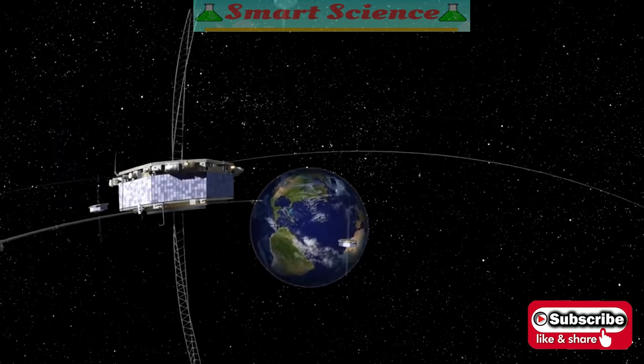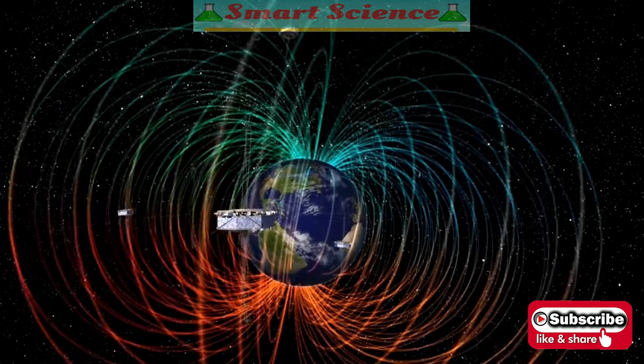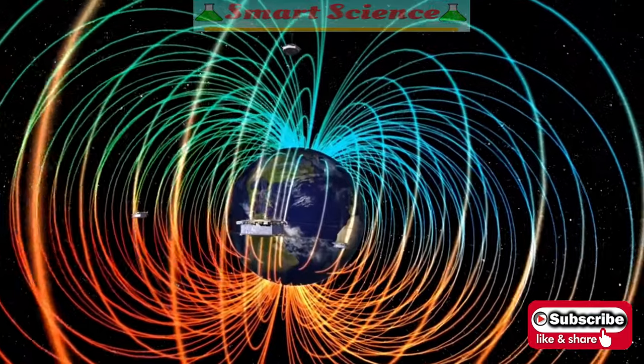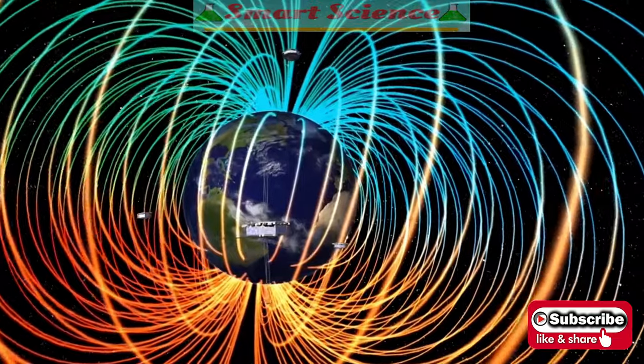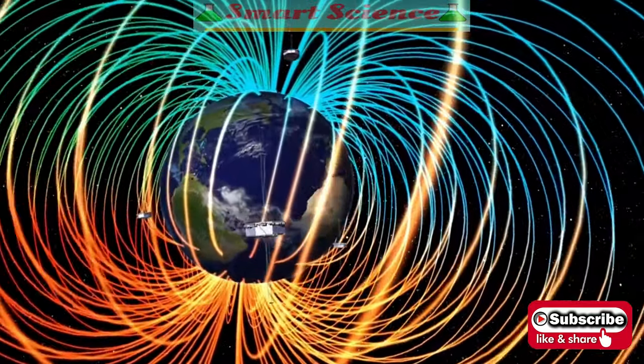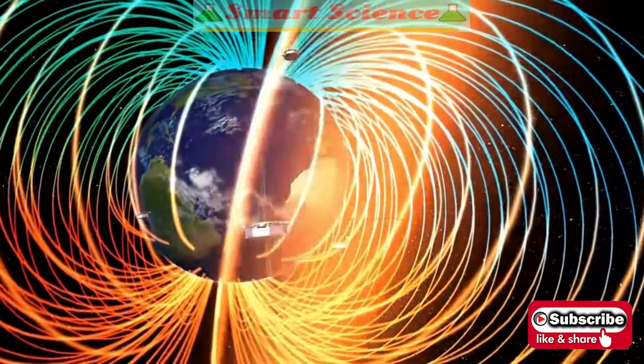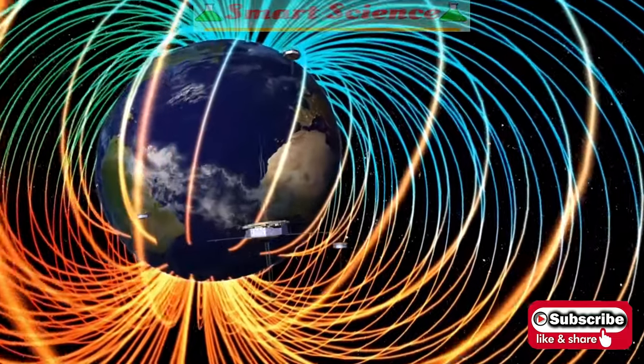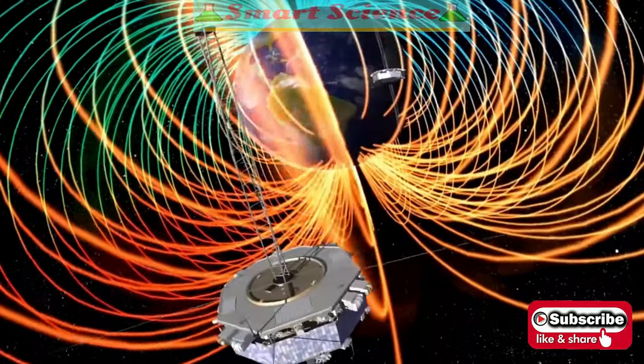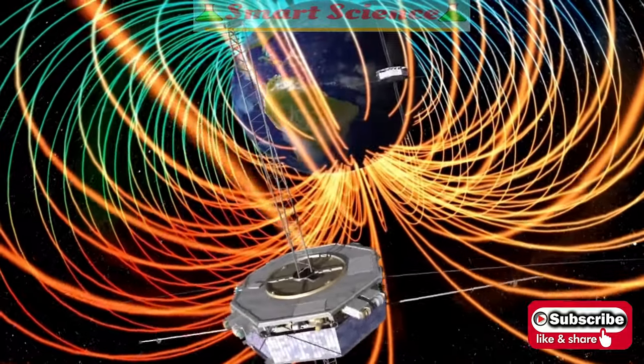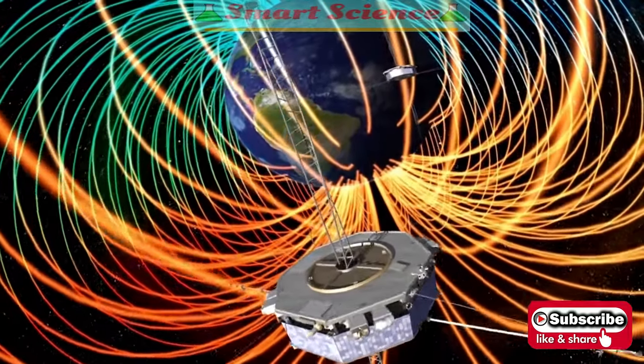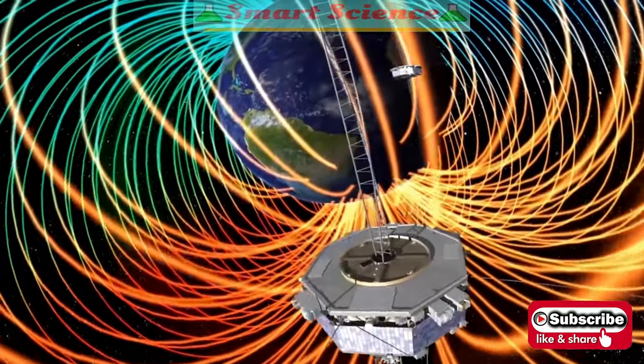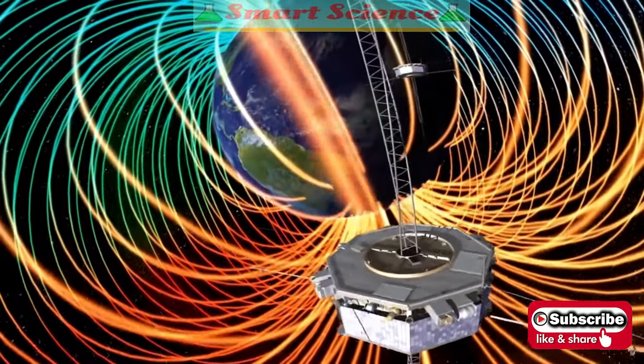The MMS spacecraft traveled directly through magnetic reconnection sites. Reconnection occurs when magnetic field lines annihilate each other and release a gigantic burst of energy. This fundamental process taps energy stored in the magnetic field and converts it into fast-moving charged particles. The MMS orbit was designed to fly precisely in the places where reconnection occurs.